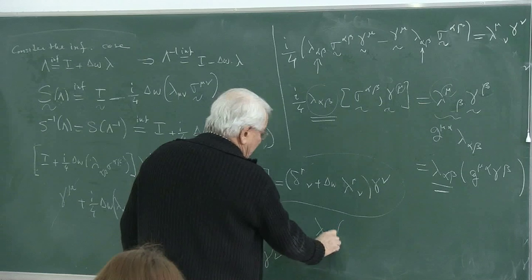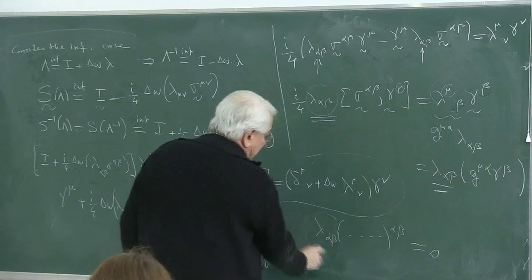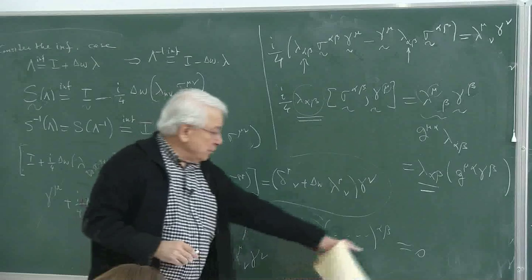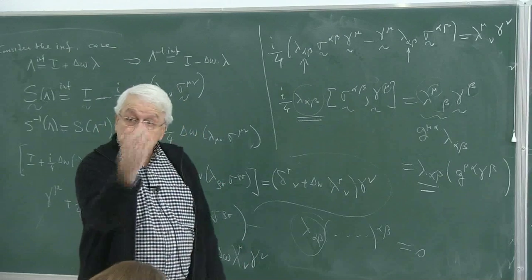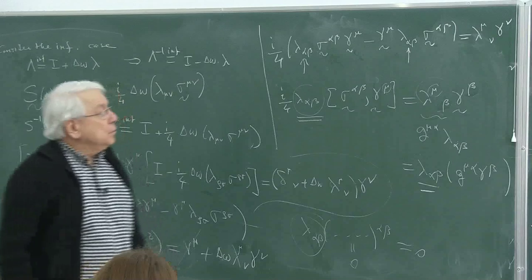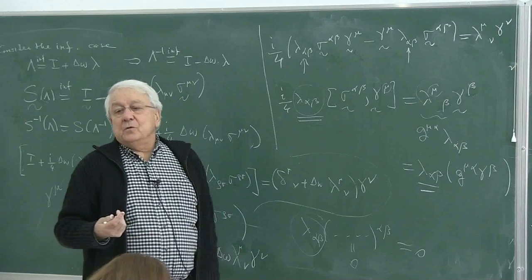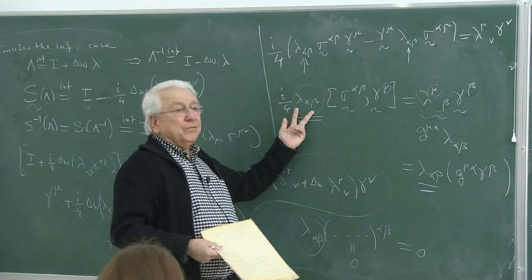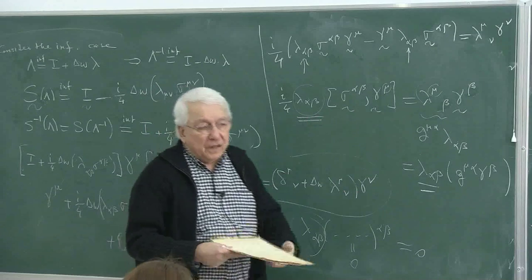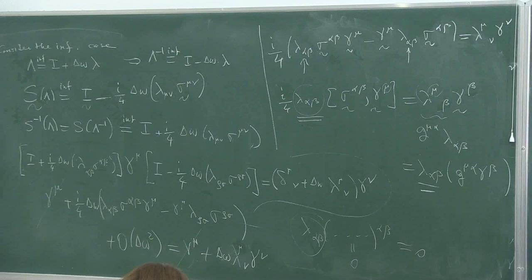Since lambda_{αβ} is arbitrary, I can write everything as lambda_{αβ} times (something) contracted equals zero. Since lambda is non-zero and arbitrary, the coefficient of lambda_{αβ} on both sides must be equal. That gives a new equation to solve.